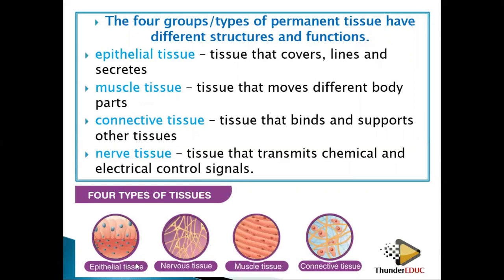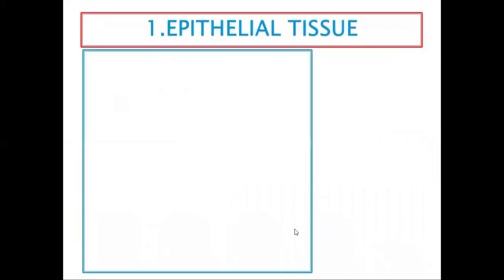Here are some examples: epithelial tissues look like this, nerve tissues look like this, muscle tissues look like this, and connective tissues look like this — they are entangled. We are going to look at these cells individually, one by one, until we finish them. Let's look at epithelial tissues.